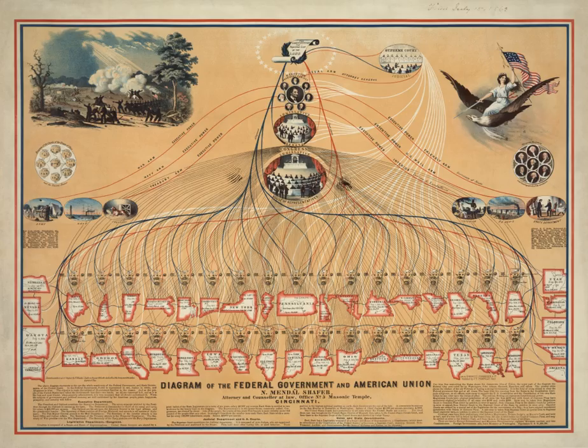Each state is allocated two senators regardless of its population. As of January 2010, the District of Columbia elects a non-voting representative to the House of Representatives along with American Samoa, the U.S. Virgin Islands, Guam, Puerto Rico, and the Northern Mariana Islands.